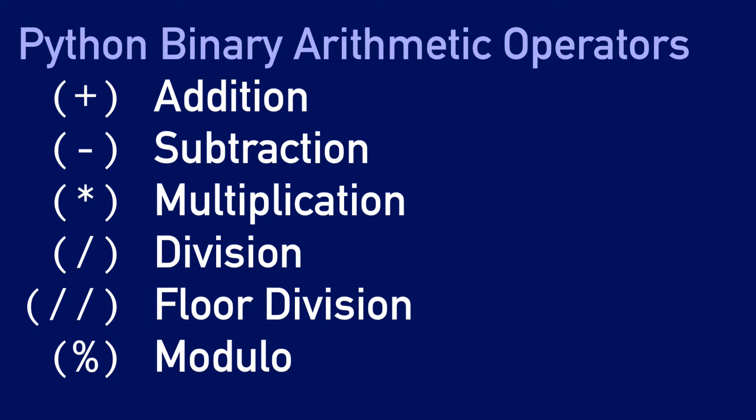We have the addition operator which uses the plus sign. We have the subtraction operator which uses the minus sign. We have the multiplication operator which uses the asterisk. We have the division operator which uses the forward slash. There's also the floor division operator which uses two forward slashes. And then finally, we have the modulo operator which uses the percent sign.